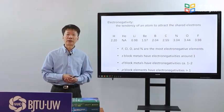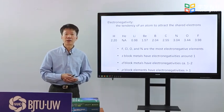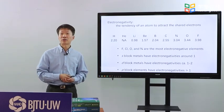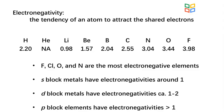According to the definition, it is found that fluorine, chlorine, oxygen, and nitrogen are the most electronegative elements. S-block metals have electronegativities around 1.